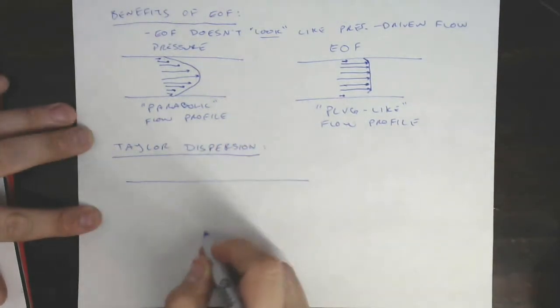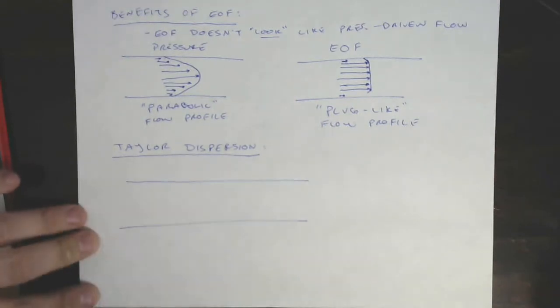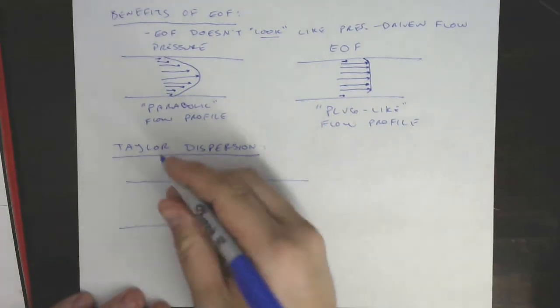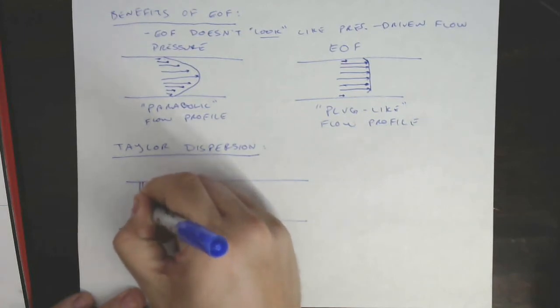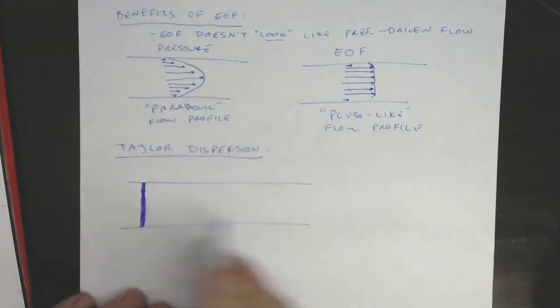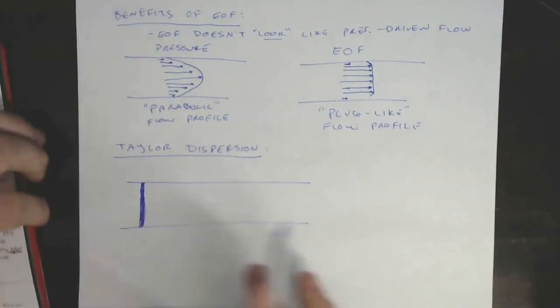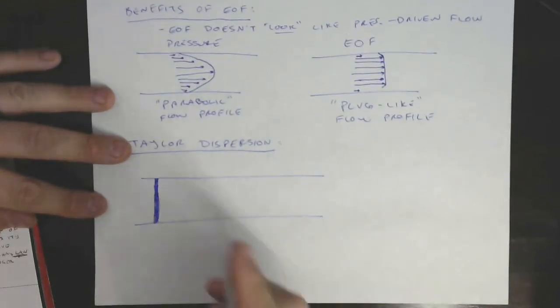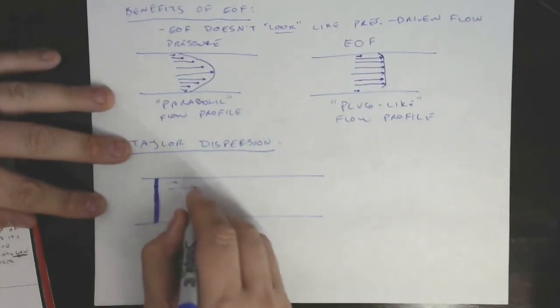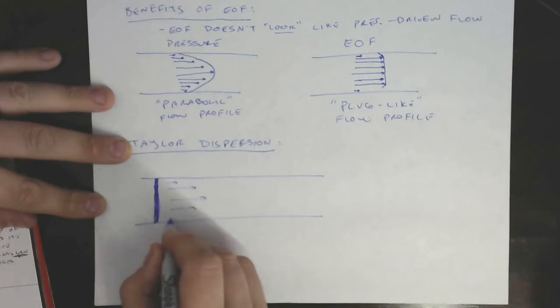And that mechanism is called Taylor dispersion. So here's how Taylor dispersion works. I want you to imagine you have some capillary or some kind of flow channel and you inject into it some narrow band of sample and we're going to flow this narrow band of sample down our channel by pressure-driven flow.